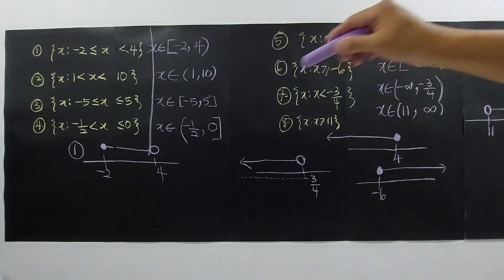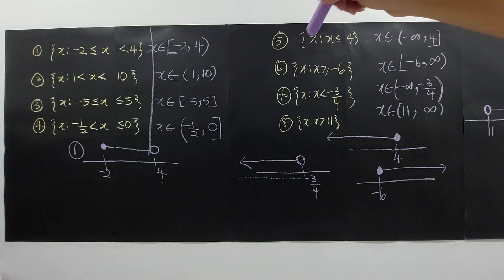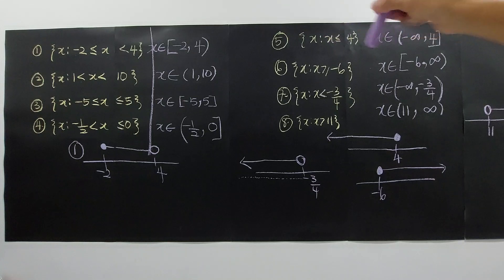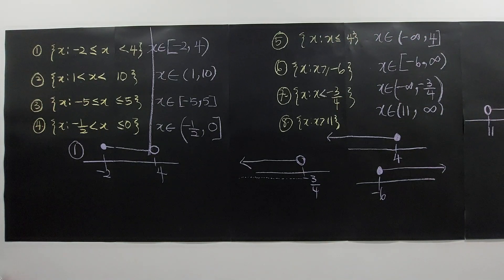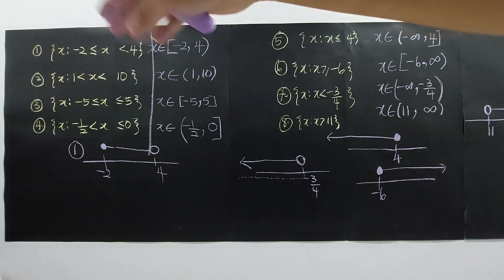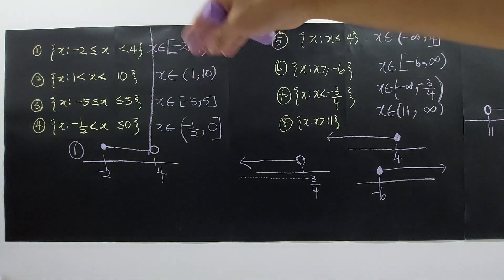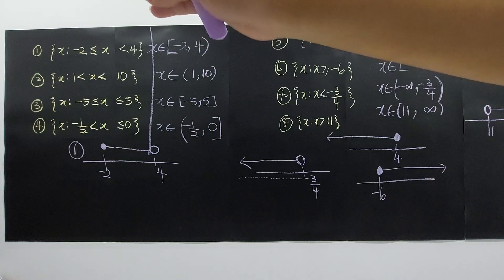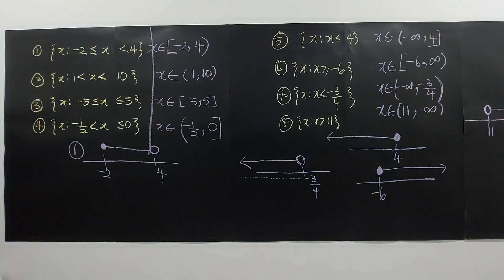These two forms — set notation and interval notation — are equivalent; they just differ in how they're written. That's all for this video. Later, we'll be using both forms to solve problems involving union and intersection of sets of numbers.